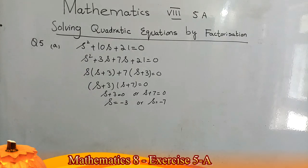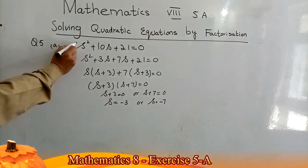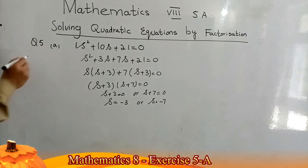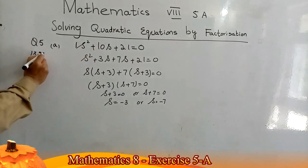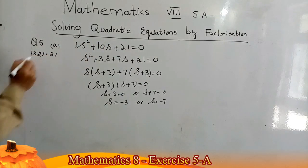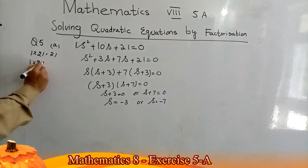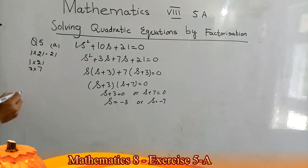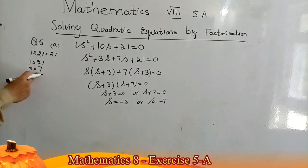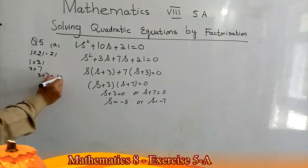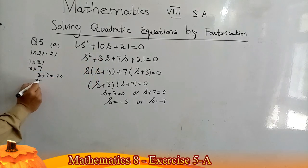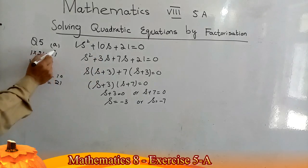This question is in standard form. The coefficient of s² is one, so I will first multiply the coefficient of s² with the constant term 21 to get 21. Now I will find the factors of 21: 3 × 7. I will select this pair because their sum makes the middle term and their product makes 21.